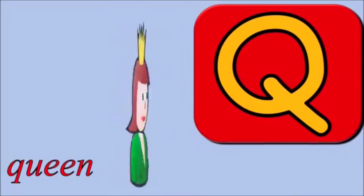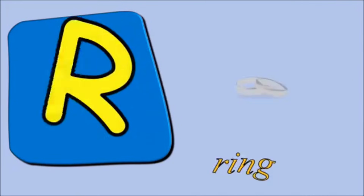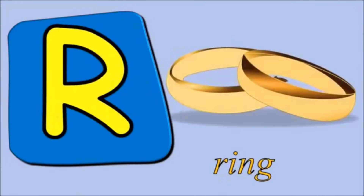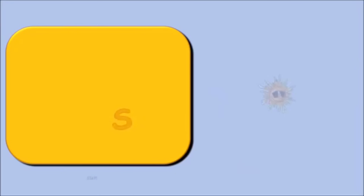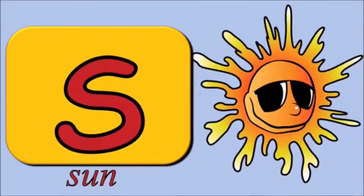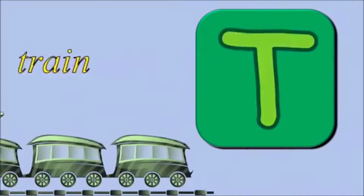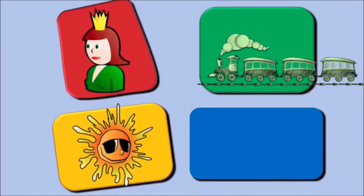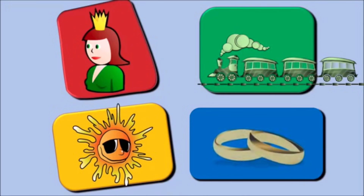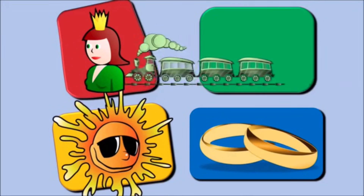Q for Queen. R for Ring. S for Sun. T for Tree. Queen, Ring, Sun, and Tree.